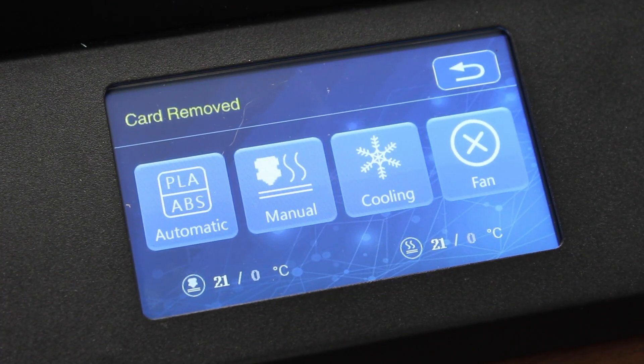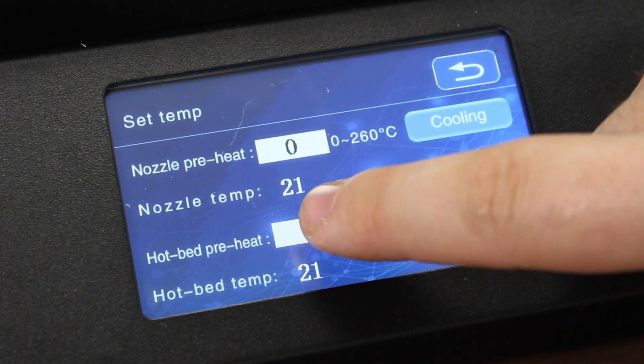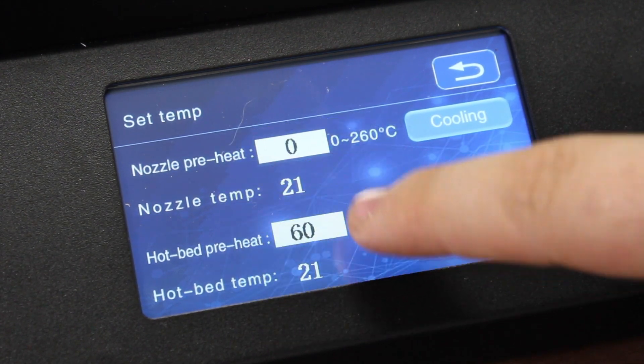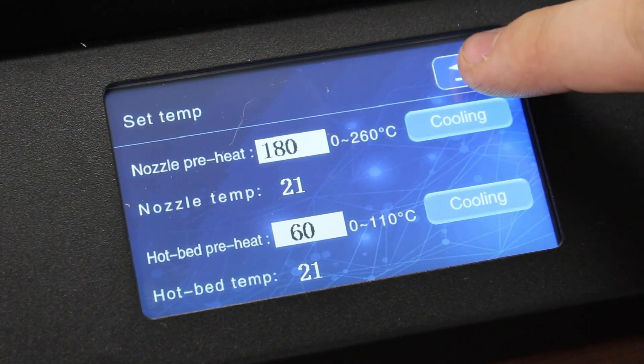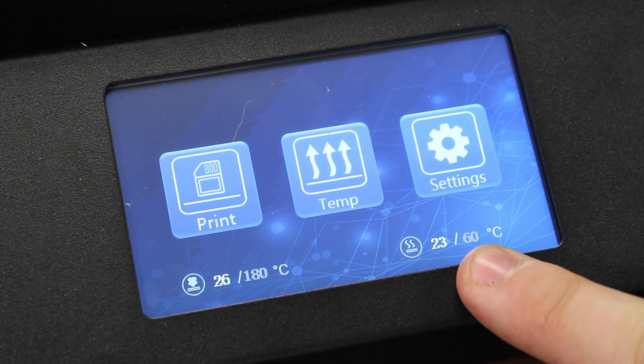In preparation for printing, go to Temperature, Manual, and then you can set the temperature of both the bed and the nozzle manually. Set the bed to 60, and then set the nozzle to 180 degrees. If successful, you will see the values reflected on the home screen.